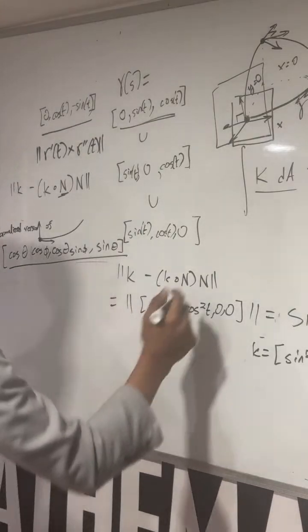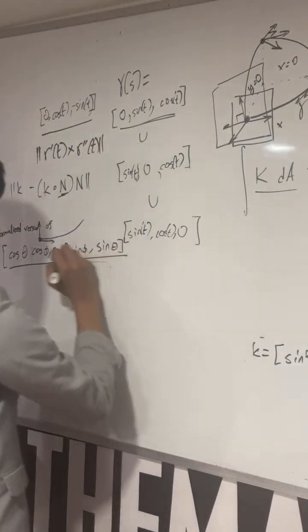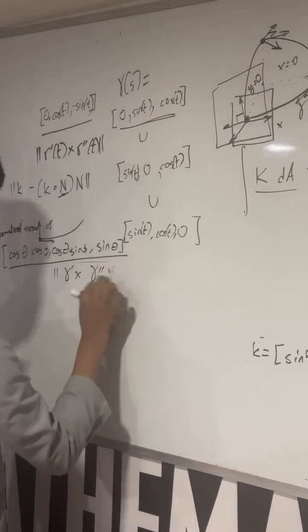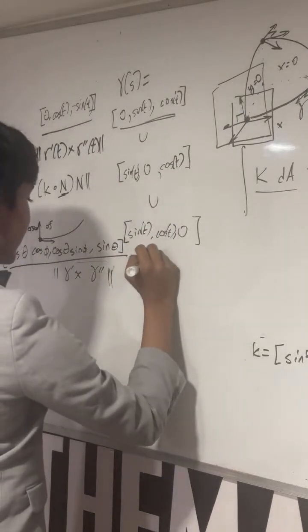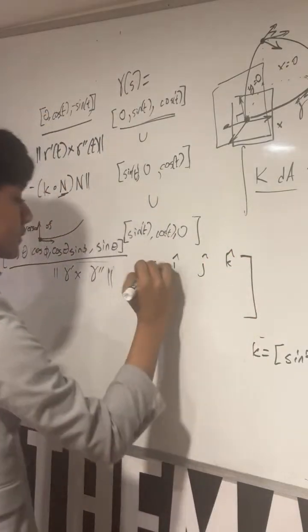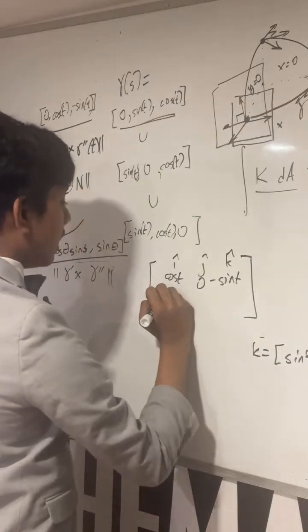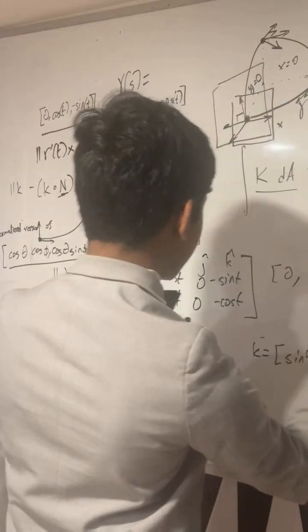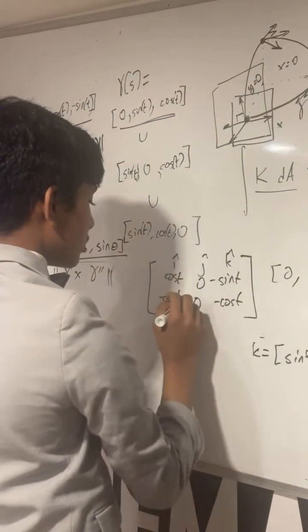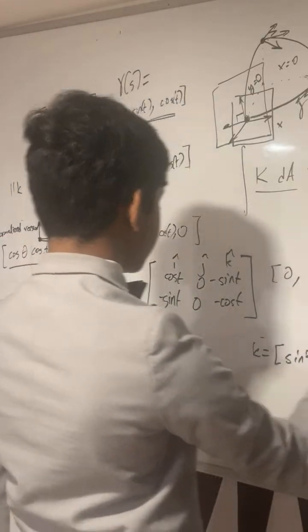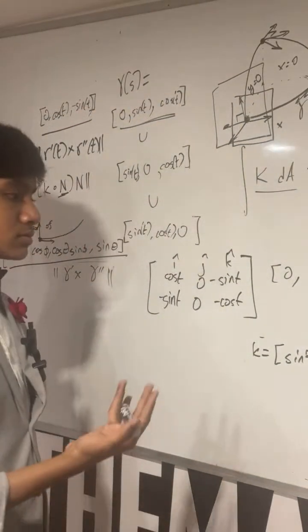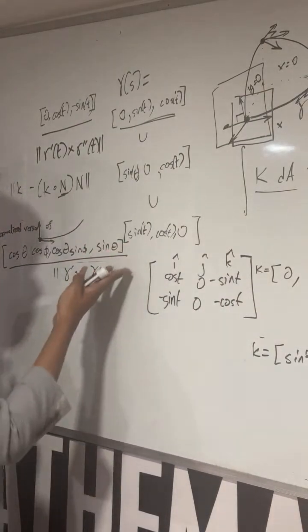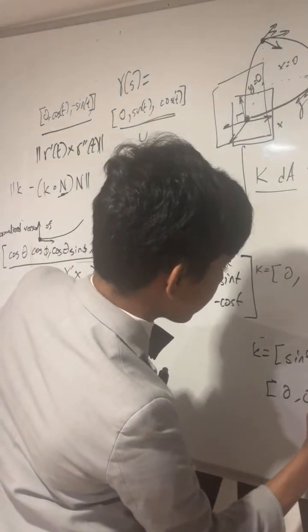So the curvature is, once again for this special case, gamma prime cross gamma double prime. So what happens here? Well, you get i j k, cos t 0 minus sin t, 0 minus sin t minus cos t. This becomes 0, second component becomes sin square t, third component becomes 0. First component becomes 0, second component actually becomes minus cos square t, third component becomes 0. Okay, so there's the second curvature vector. And finally the last curvature vector, well, I think you can expect it's going to be 0 0 sin square t minus cos square t.